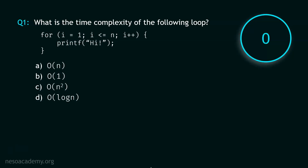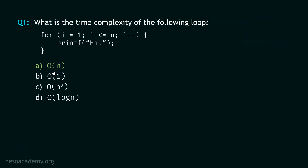Stop. The correct option is option A — Big O of N. This is the time complexity of this for loop.